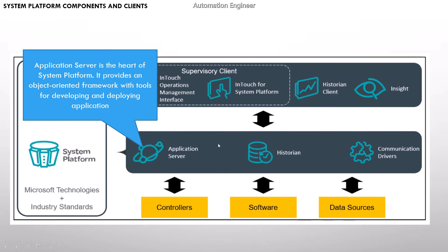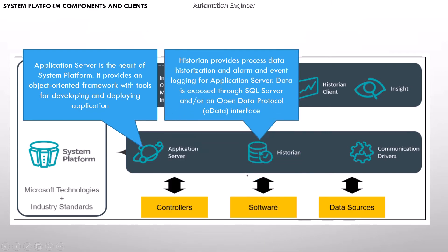Now we come to the second layer: the system platform components. First, we talk about the Application Server. The Application Server is the heart of the system platform — it provides an object-oriented framework with tools for developing and deploying applications. The second component is the Historian. The Historian provides process data historization and alarm and events logging for the Application Server. The data is exposed through SQL Server or an Open Data Protocol OData interface.